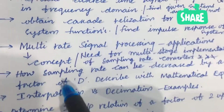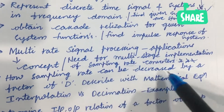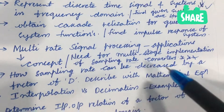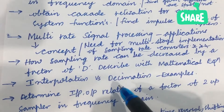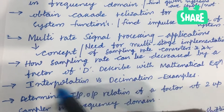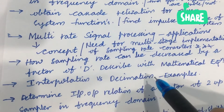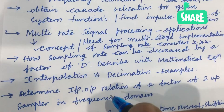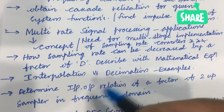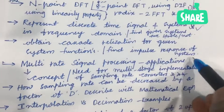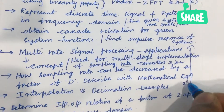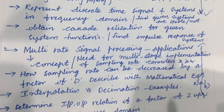Dear students, later, how sampling rate can be decreased by a factor of D described with a mathematical equation is important. Later, interpolation versus decimation with examples — you need to differentiate these with the help of examples. Also, determine the input-output relation of a factor-of-two upsampler in the frequency domain. From this concept, you will be getting the second question, that is 2A as well as 2B, students.